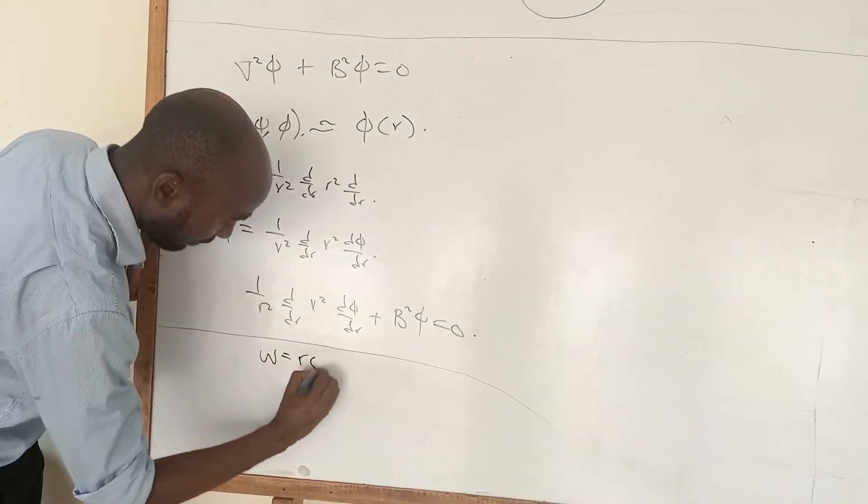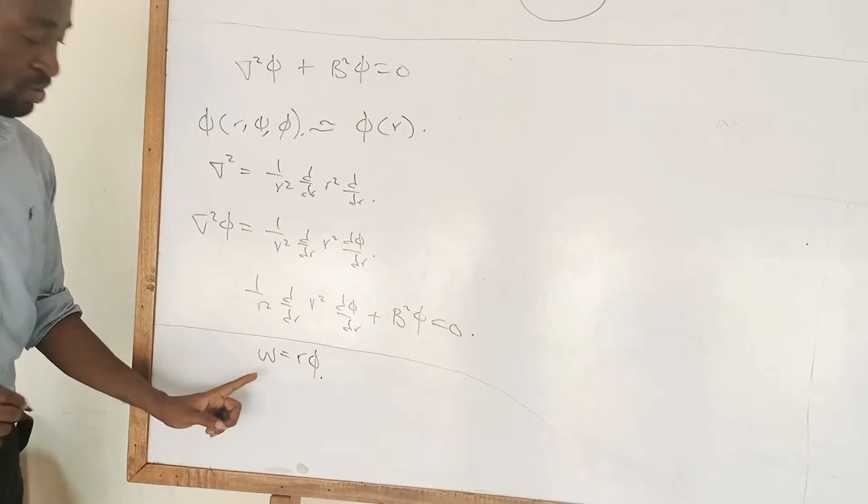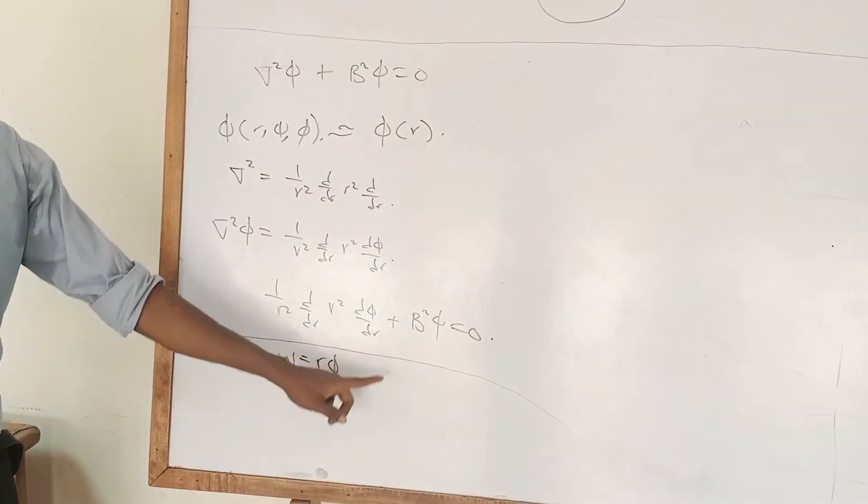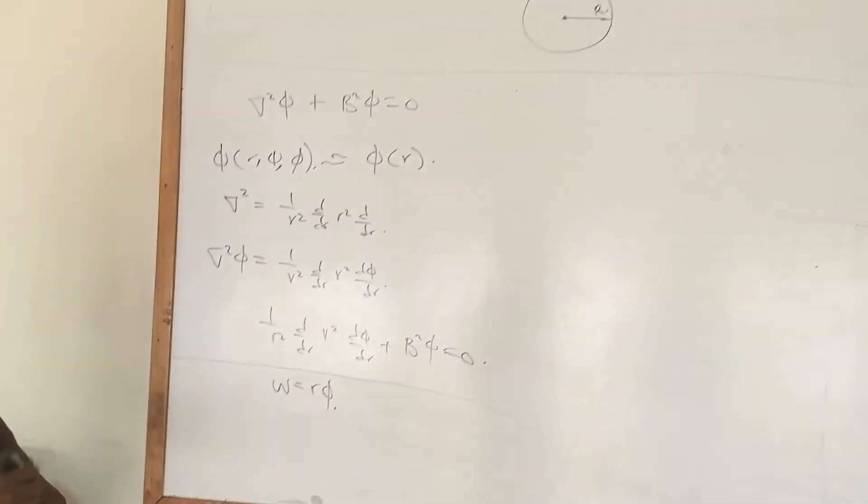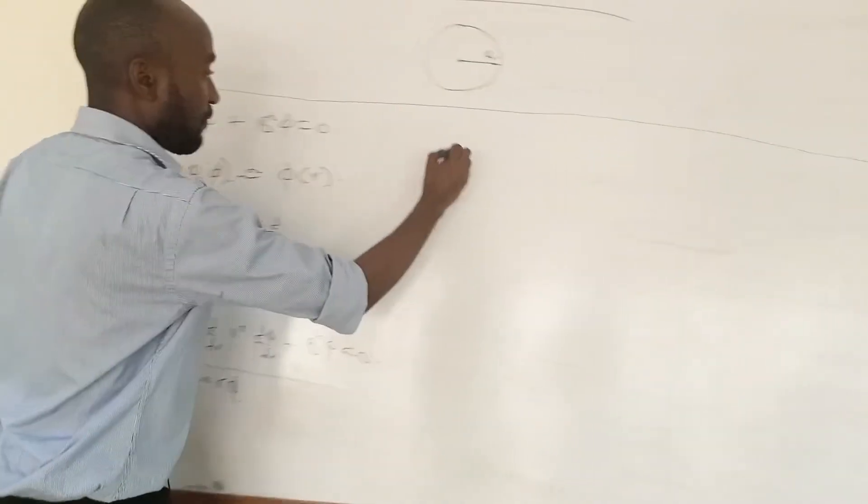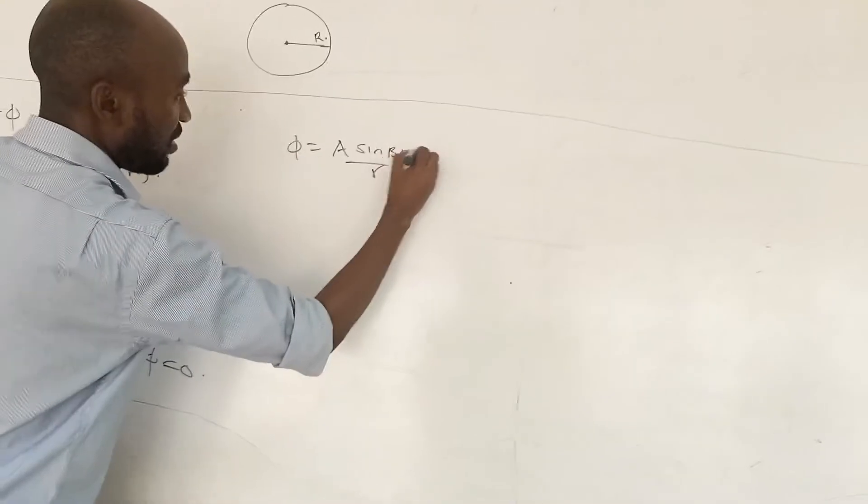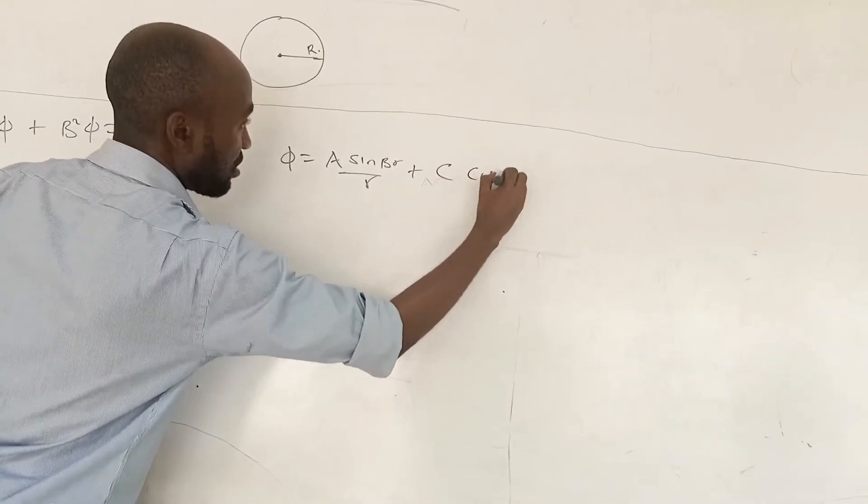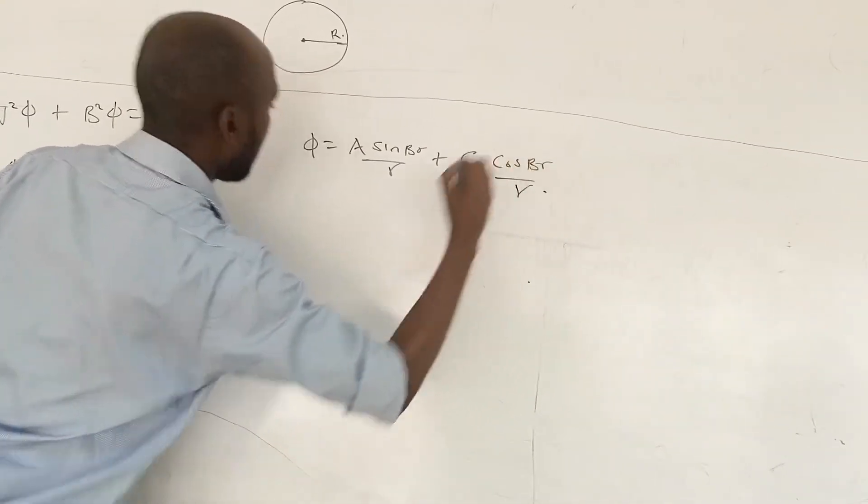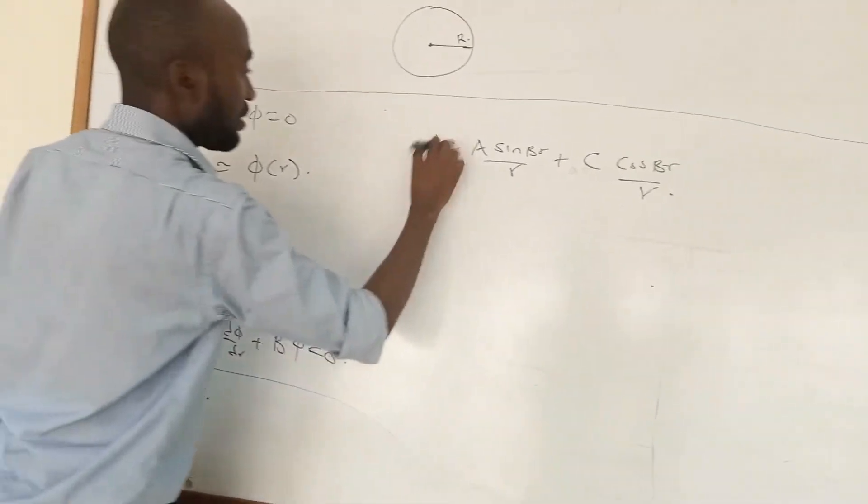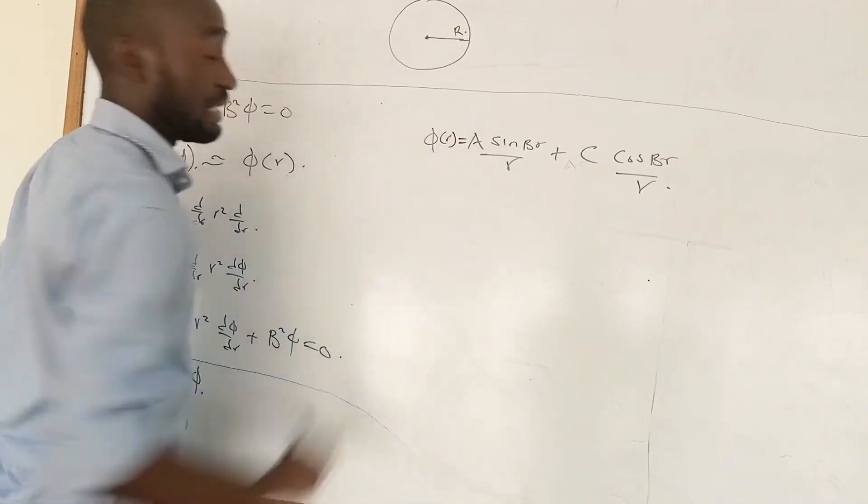w is equal to r phi. You can actually work that out yourself, and if you work yourself through that, what you have is phi is equal to A sin Br over r plus C cos Br over r. This will be the general solution.